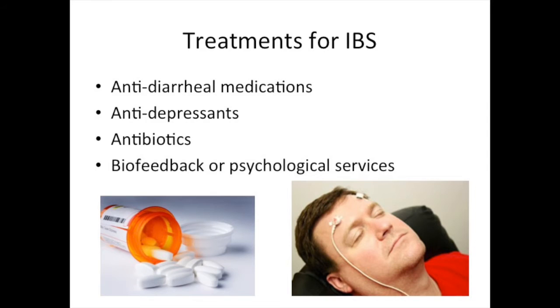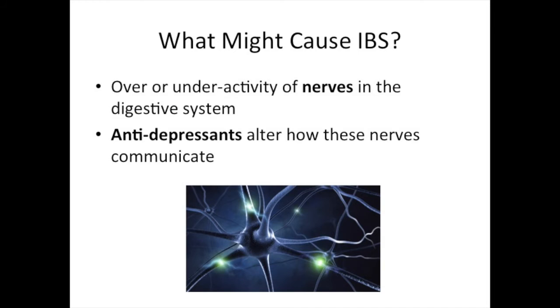There are many treatments for IBS including antidiarrheal medications, antidepressants, antibiotics, and sometimes biofeedback or psychological services. It is important to remember that the gut contains a large number of nerves. These nerves control the movement of food from your mouth to your bottom. We think IBS is due to over or under activity of some of these nerves, which is why we sometimes use antidepressant medications. Antidepressant medications alter how these nerves communicate with each other.